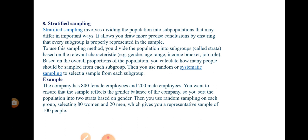Based on the overall proportion of the population, you calculate how many people should be sampled from each subgroup. Then you use random or systematic sampling to select a sample from each subgroup. So within each stratum, you apply a random or systematic sampling method to collect your samples.